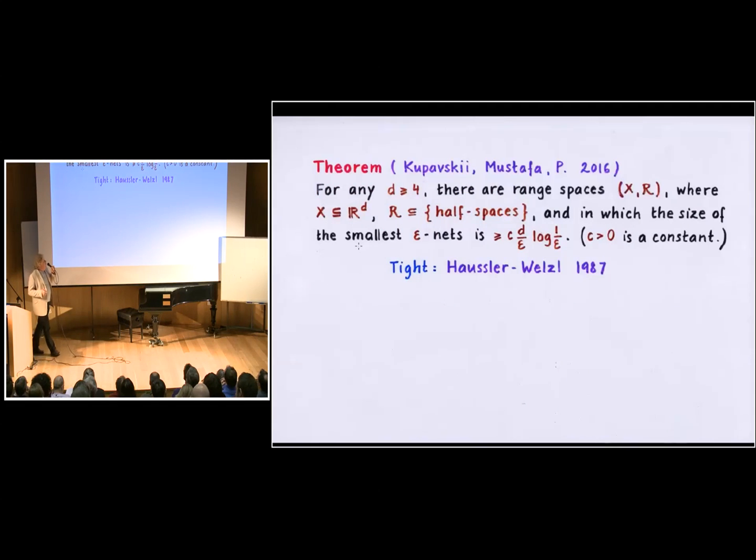There is no hope of improving them even in fairly simple geometric settings. Now, here is a more recent development. So this previous theorem that I mentioned was about half-spaces in four-dimensional space, but it turned out that in a joint paper with Andrei Kupavskii, who is here, and Nabil Mustafa, who is not, that actually it generalizes to half-spaces in D dimensions, and in the generalization, the dimension D, which is also the VC dimension - the VC dimension of this hypergraph is actually D plus 1. So actually, the smallest epsilon nets have size D over epsilon times log 1 over epsilon. So in some sense, it finishes this trail of research.